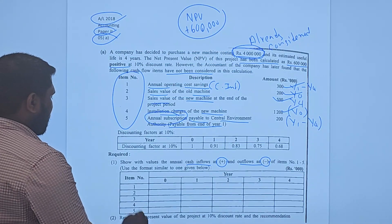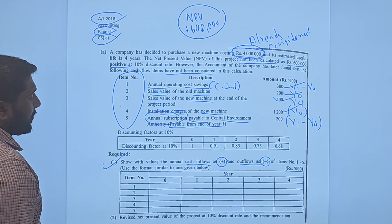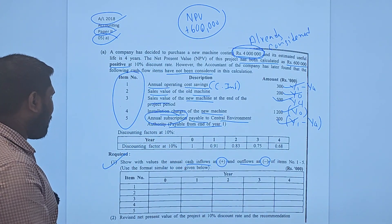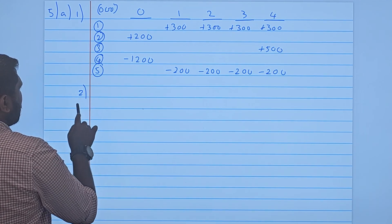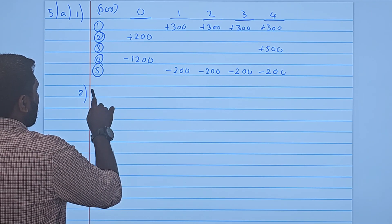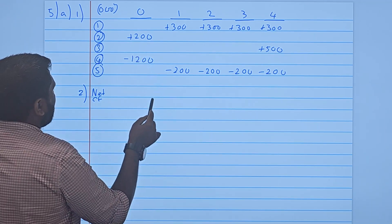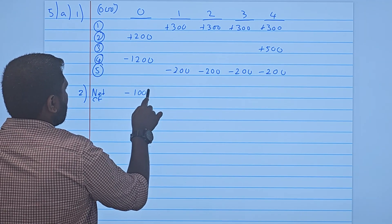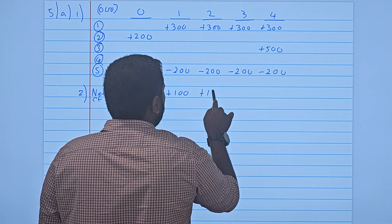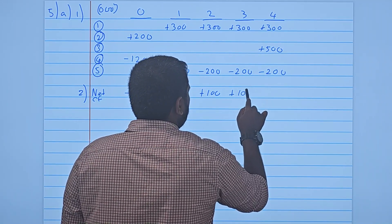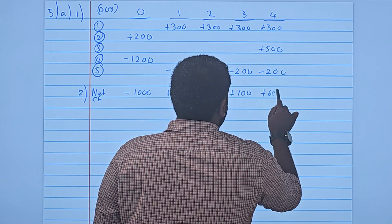So we are done with the first part of the question using the required format. Next, they are asking us to calculate the revised NPV. To get the revised NPV, you need the net cash flows first. Net cash flow: Year 0 = −1,000; Year 1 = +100; Year 2 = +100; Year 3 = +100; Year 4 = +600.